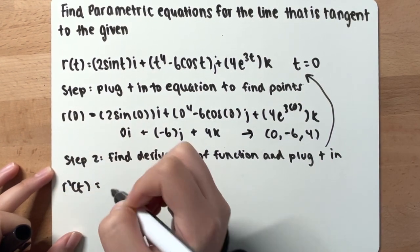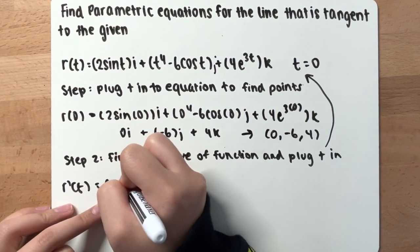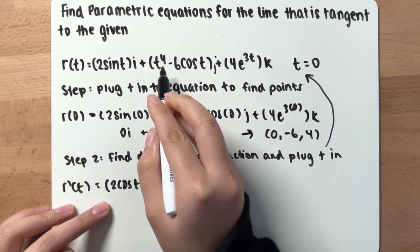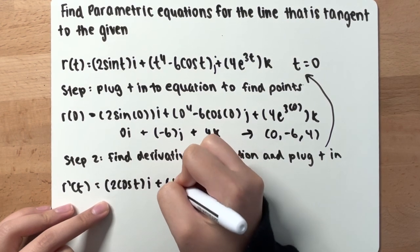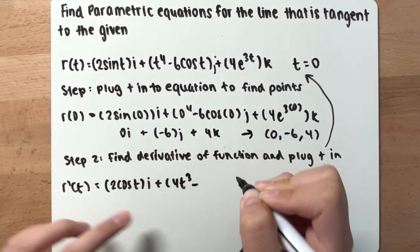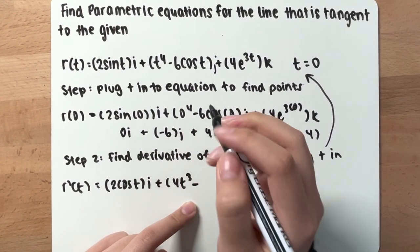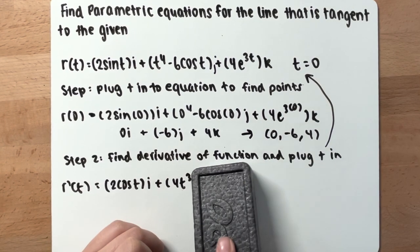Alright, so r'(t), you have derivative of 2 sine t is 2 cosine t, i plus derivative of t^4 minus 6 cosine t is, bring 4 down, you have 4t^3 plus derivative of negative 6 cosine t is plus 6 sine t.